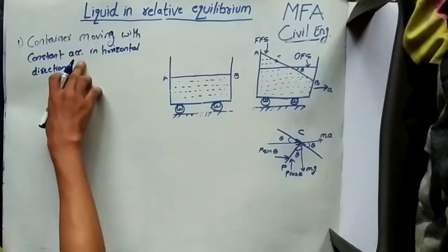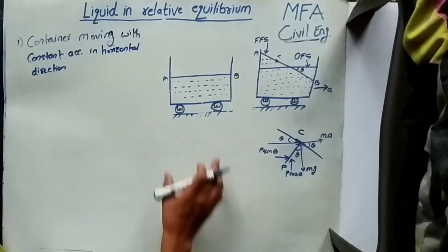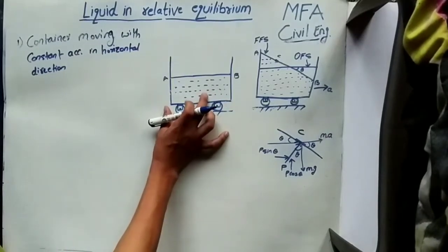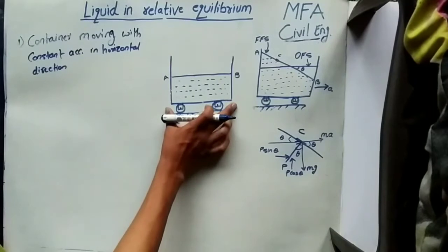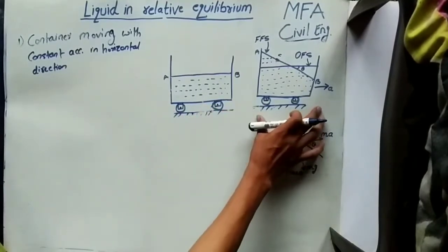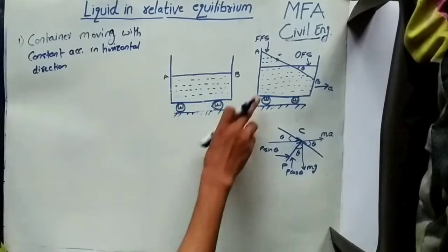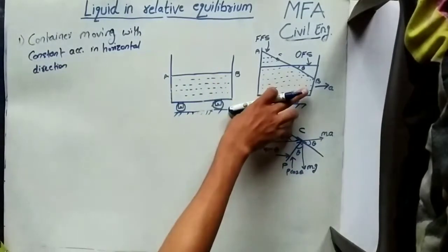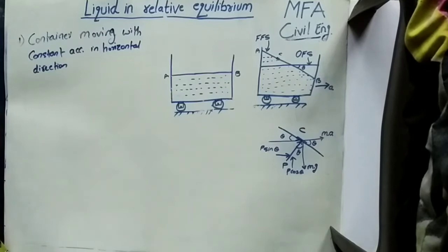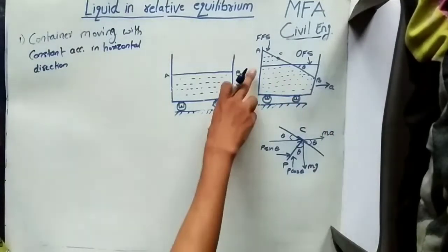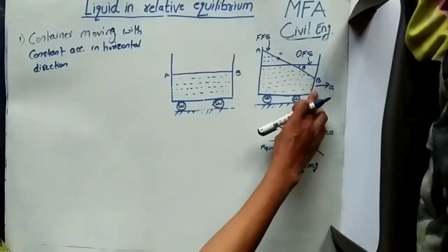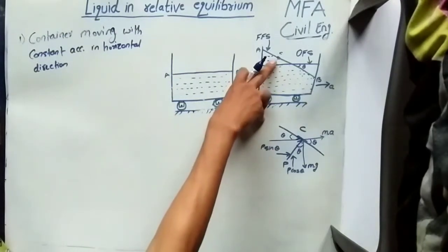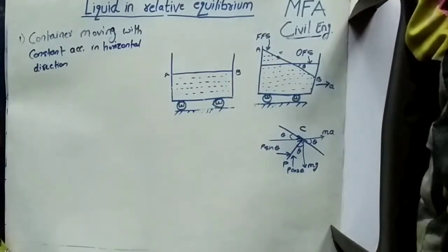First case: the container moving with constant acceleration in a horizontal direction. Consider a container holding a liquid with a free surface AB when the container is at rest. When the container is allowed to move with constant acceleration in the rightward direction, after a certain time the liquid occupies another position in which A'B' is the new free surface. Due to the influence of the acceleration, the liquid rises at the back boundary of the container and falls at the front boundary.